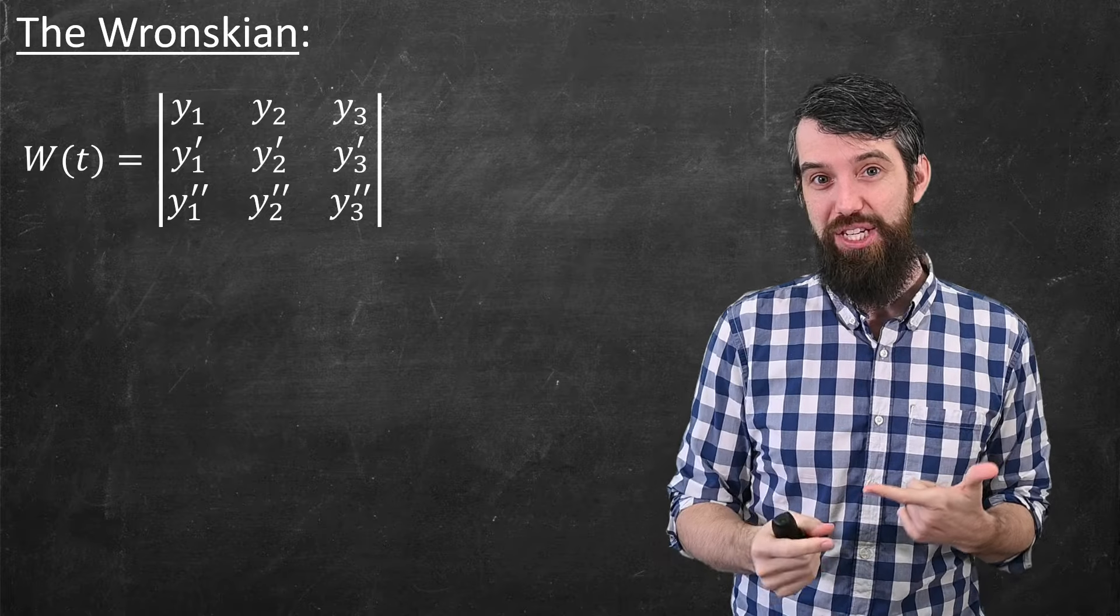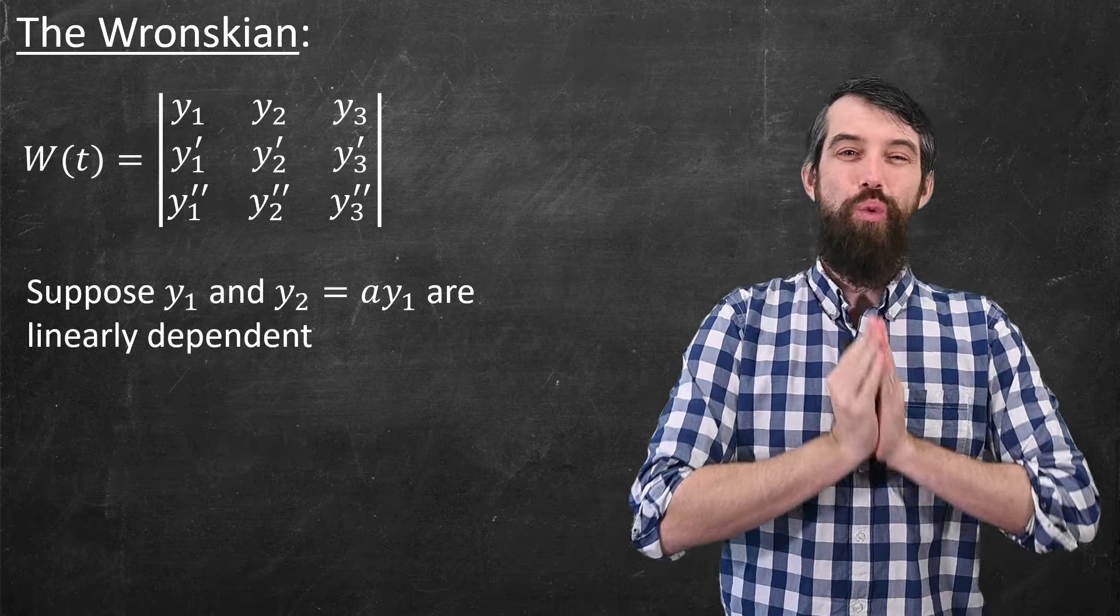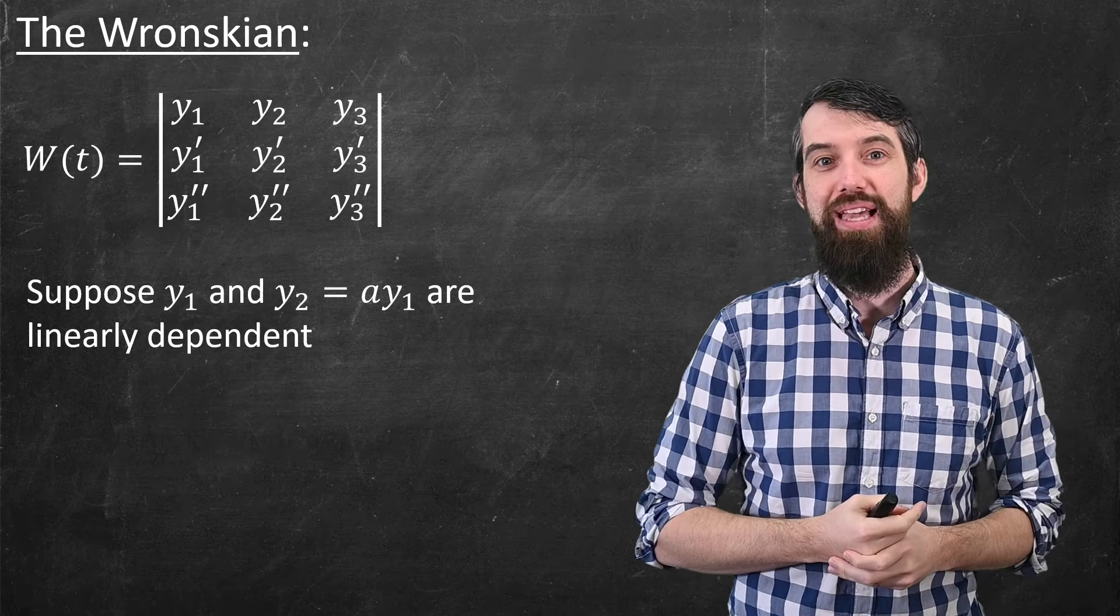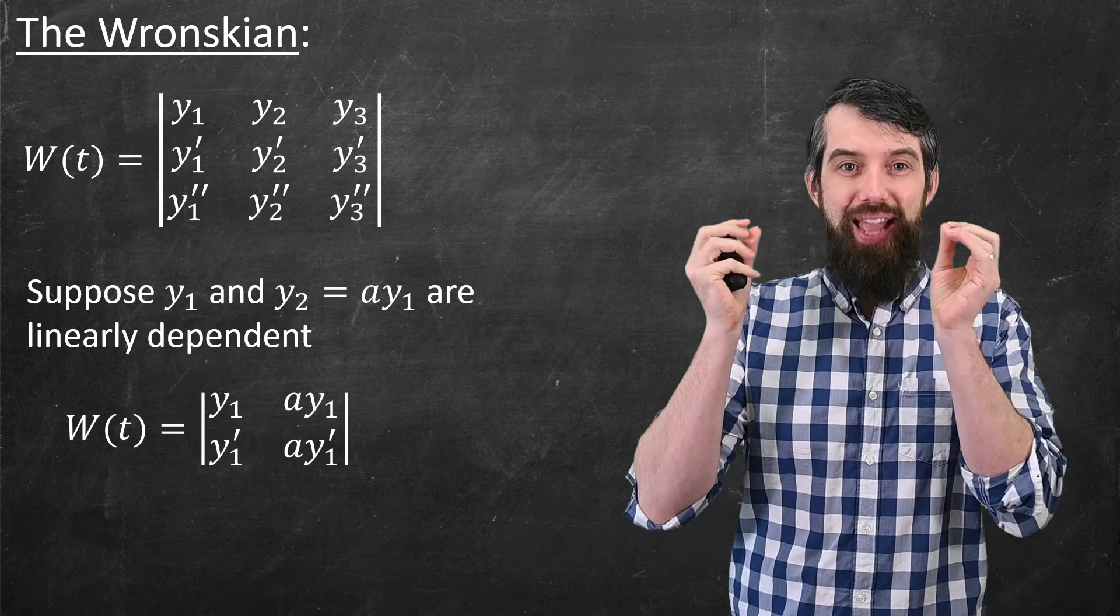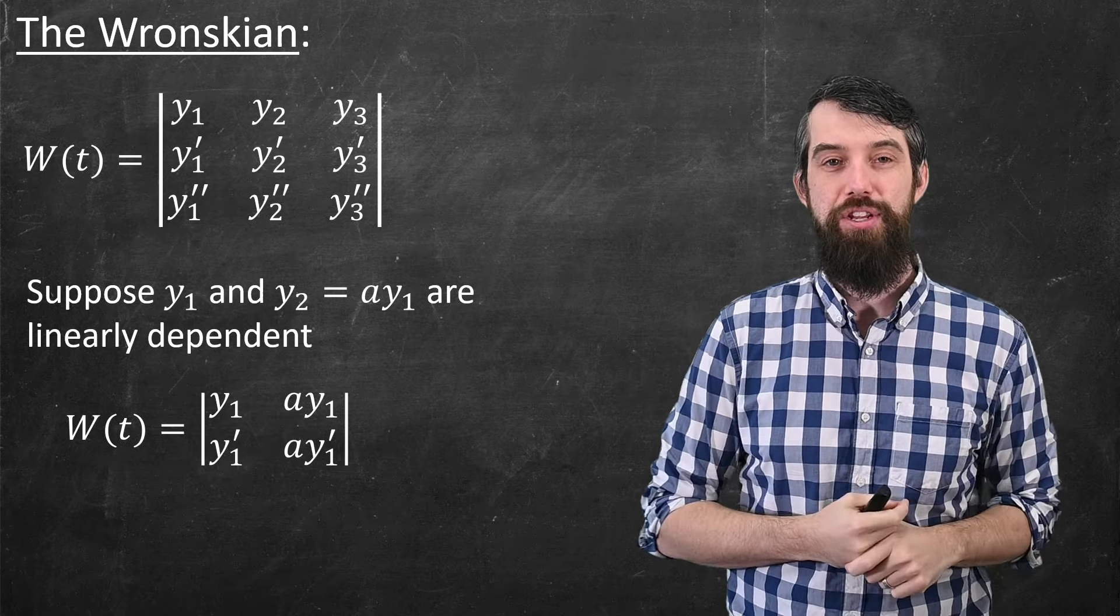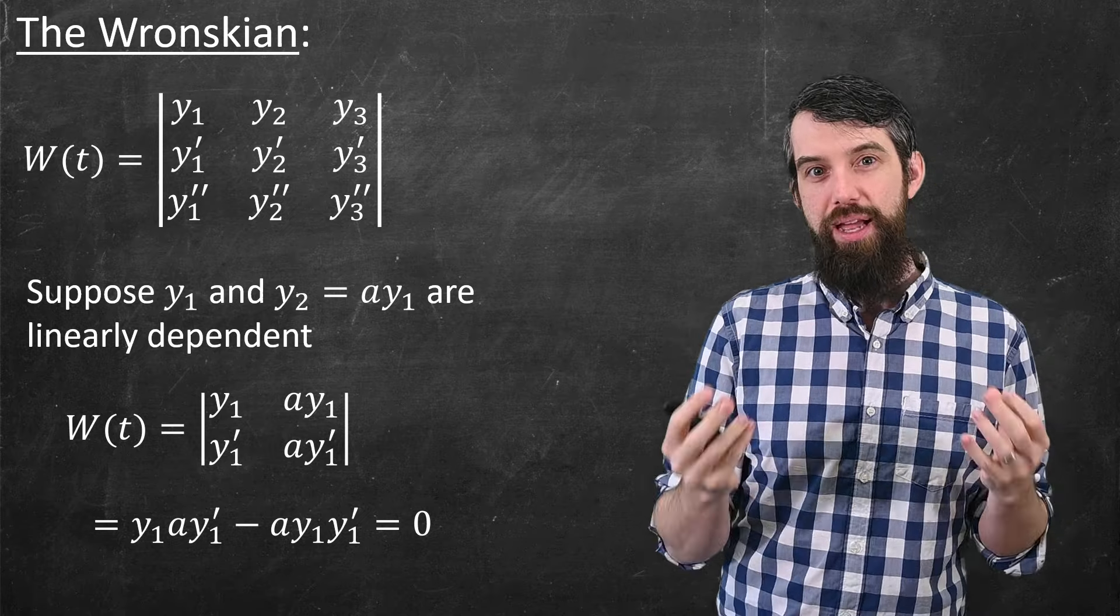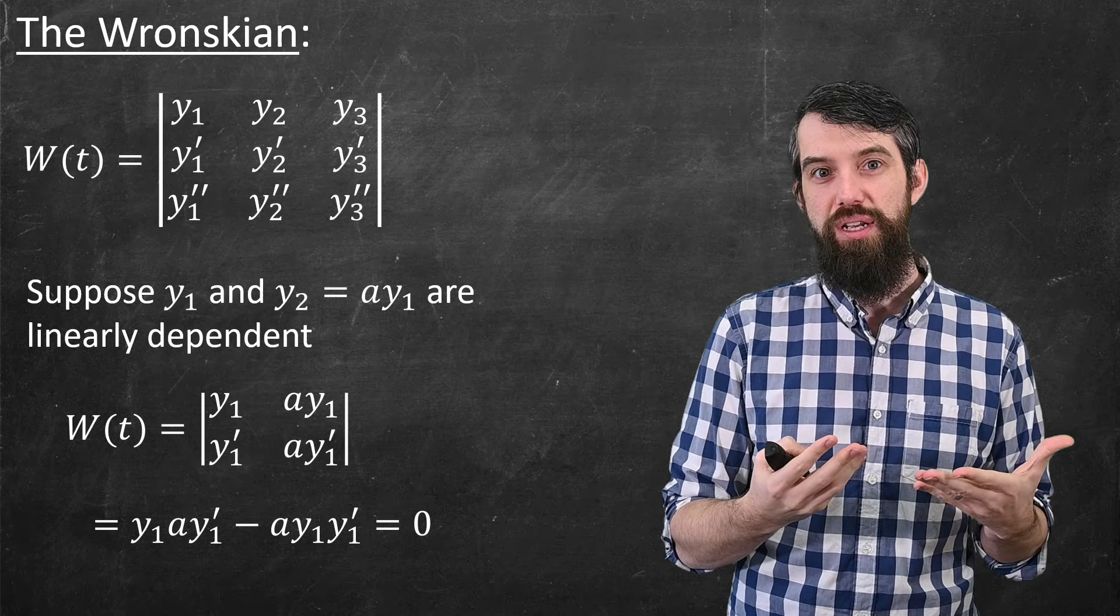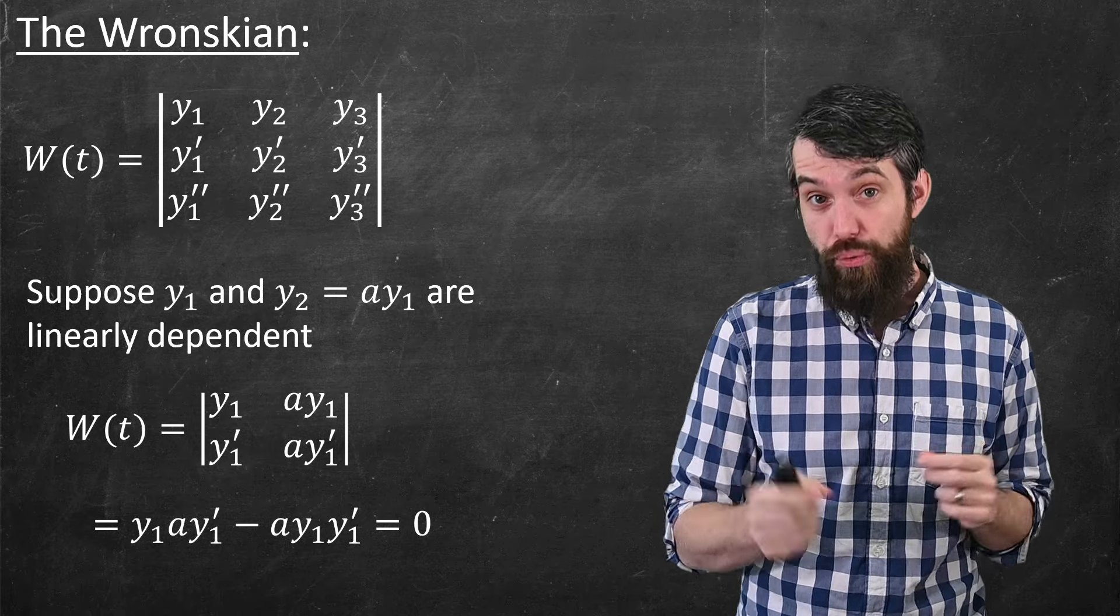So to motivate what that connection might be, let's actually just do two functions. I'm going to have y₁ and y₂, and I'll imagine I know they are dependent, so y₂ is just some non-zero multiple a of y₁. So I'll start with the dependent case and see what happens. If I take the Wronskian of that—y₁ and y₁', and then a·y₁ is my y₂, and a·y₁' is the derivative of y₂—well, you take the determinant and you get the same thing. It just cancels and equals zero.